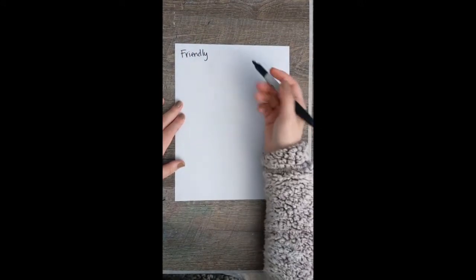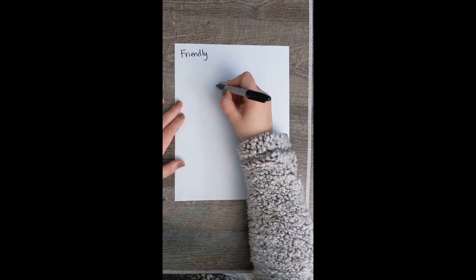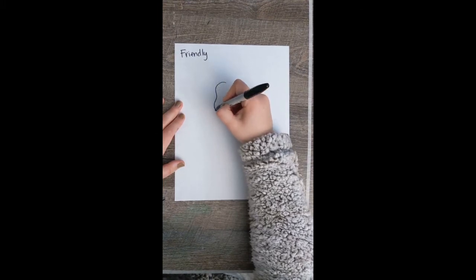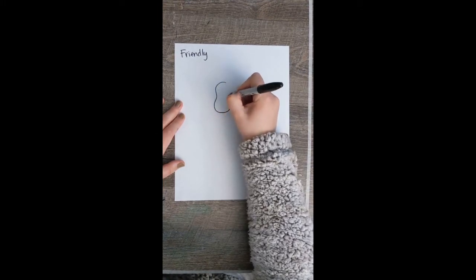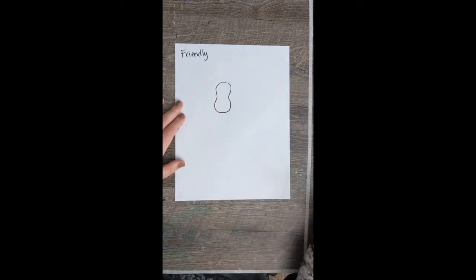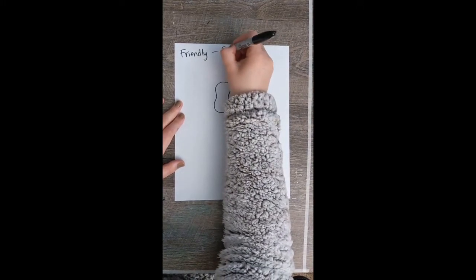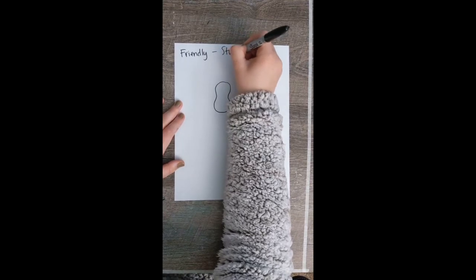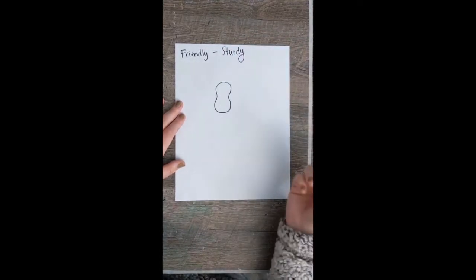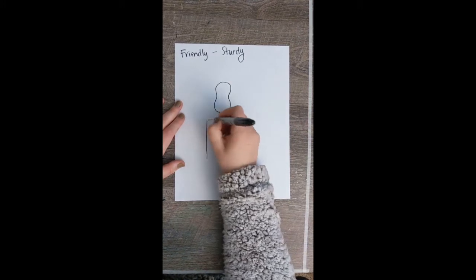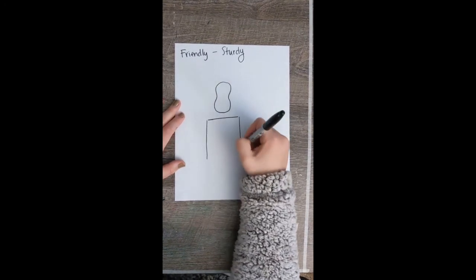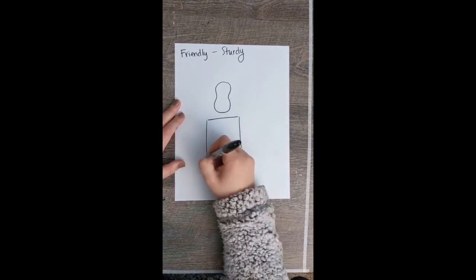So I'm going to give them a more rounded shape. And I want mine to be kind of sturdy, somebody that you can rely on. So I think my body shape is going to be a little bit more square.